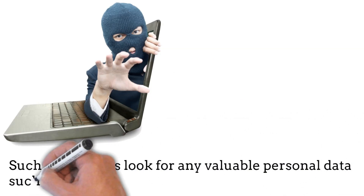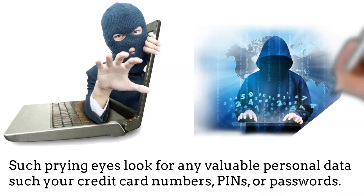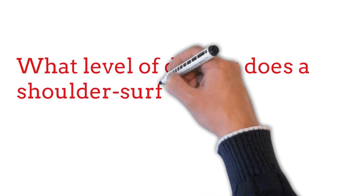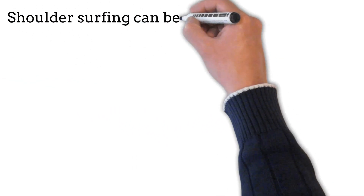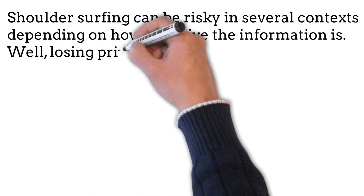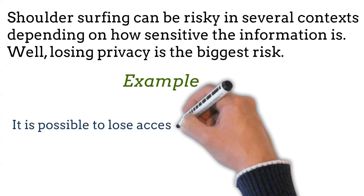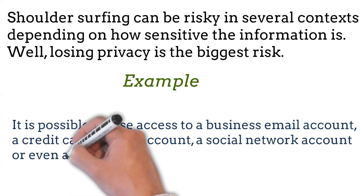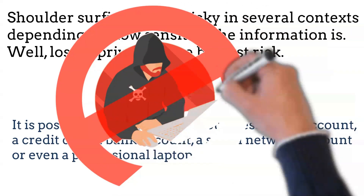Such prying eyes look for any visible personal data, such as your credit card numbers, PINs, or passwords. Shoulder surfing can be risky in several contexts depending on how sensitive the information is. Losing privacy is the biggest risk — it is possible to lose access to a business account, credit card, bank account, social network account, or even a professional laptop.